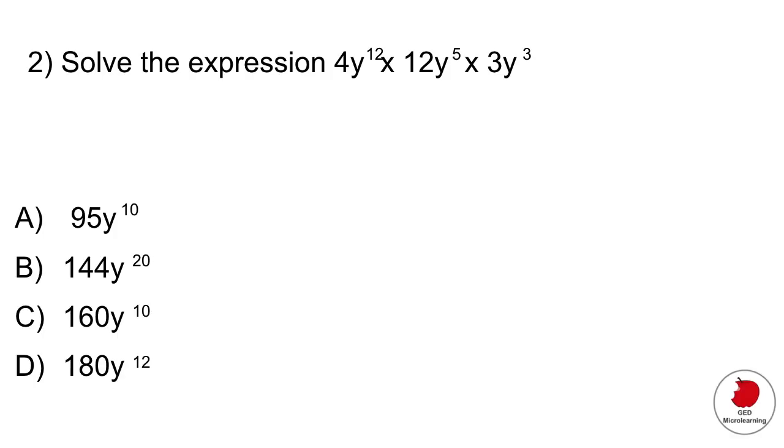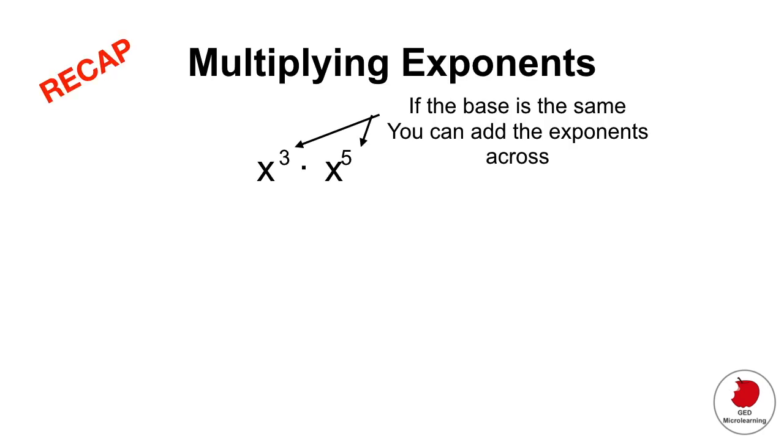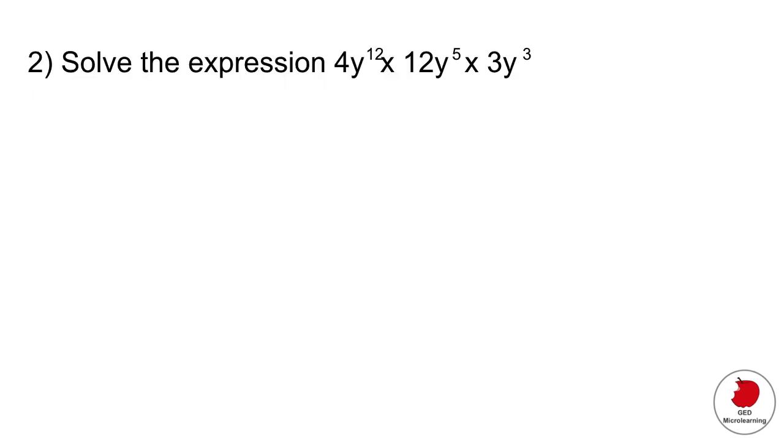This next question involves knowing a little bit about multiplying exponents. When you have a situation like this where the base is the same, meaning all your variables are the same with all y's, what you can do with the exponents is simply add them across. So if you have x raised to the third multiplied by x raised to the fifth, you just add them across like this. And then the coefficients you multiply together. So let's add those exponents together. That would give you 20.